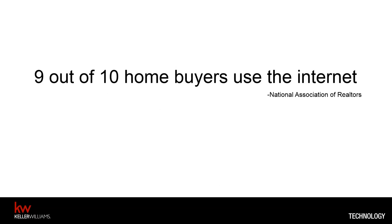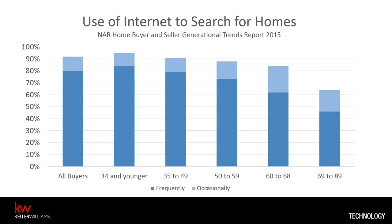Now, why is this important? These stats don't seem to be changing. 9 out of 10 home buyers are using the Internet in their search today — it's where all the eyeballs are. 80% of all buyers say they use the Internet frequently during that home search, and almost every age range is predominantly frequent, which means the use of the Internet in the home search is not an age thing. It's actually a consumer thing.